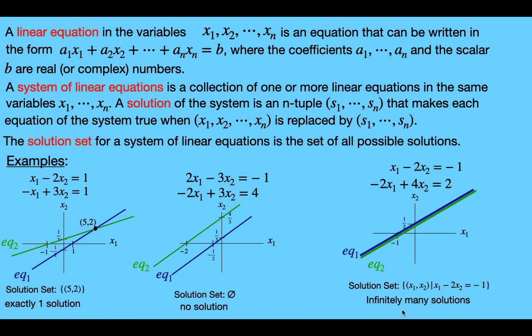Because when we're working with two variables, the equations are represented by lines. We can't have a line intersecting another line at exactly two distinct but not infinitely many points, because that would require the line to bend to meet another line in two points. So with only two variables, we can only have exactly one solution, no solution, or infinitely many solutions — which is pretty clear from the pictures.